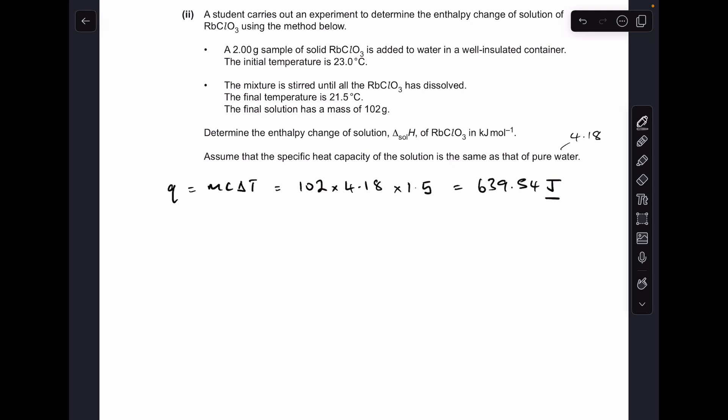not that 2 grams of the solid RBCLO3. That's multiplied by the specific heat capacity of the solution, which we're told is the same as water, so 4.18, multiplied by the temperature change. So this is dropped by 1.5 degrees C. So that comes out at 639.54 joules.